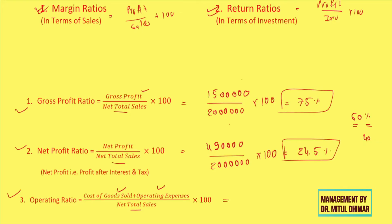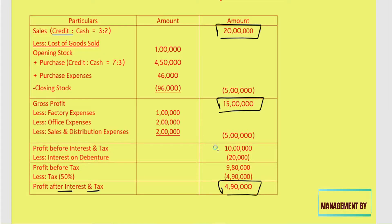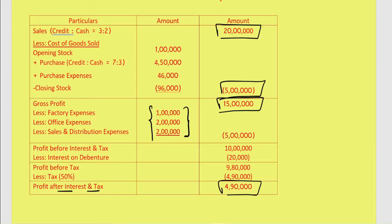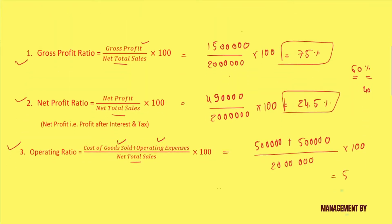For operating ratio, the denominator is 20 lakh rupees of sales. The COGS from the income statement is 5 lakh rupees, and other operating expenses at factory, office, and sales level total another 5 lakh rupees. So: 5 lakh COGS plus 5 lakh other operating expenses equals 10 lakh, divided by 20 lakh into 100, giving an operating ratio of 50%. This means against sales of 100 rupees, 50 rupees are operating expenses.